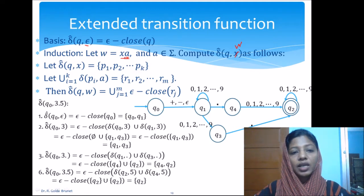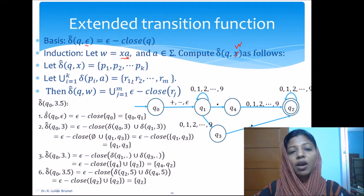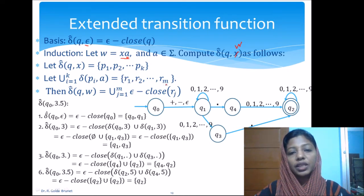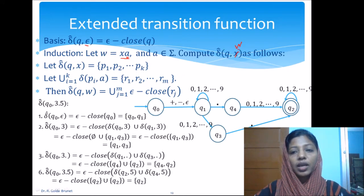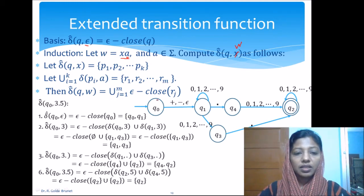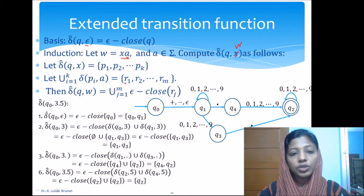After accepting x, we have to accept a. So we find the transition from each of the pᵢ in that set on input a, take the union of all of them, and let the result be r₁ to rm. Then we find the epsilon closure of each of these states and take their union to find the transition from state q upon accepting the full input w — that is, we find the epsilon closure of each r and take the union of all of them.